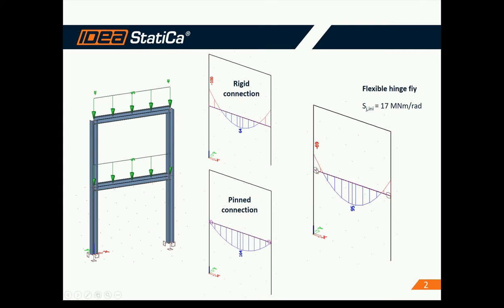What happens if we add flexible hinges on the ends of the beam with a certain value of flexibility? We recalculate the project. The load is redistributed along the beam and the values of internal forces are different. The flexibility of the connection has a major impact on the internal forces.